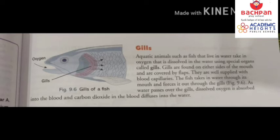Gills are covered by a flap and are well supplied with blood capillaries. Fish take in water through the mouth and force it out through the gills. As water passes out through the gills, dissolved oxygen is absorbed into the blood.